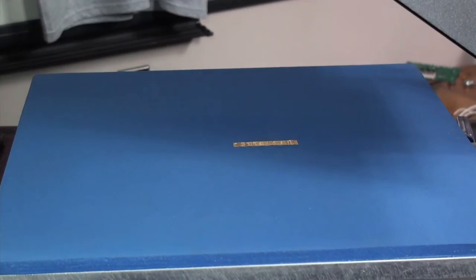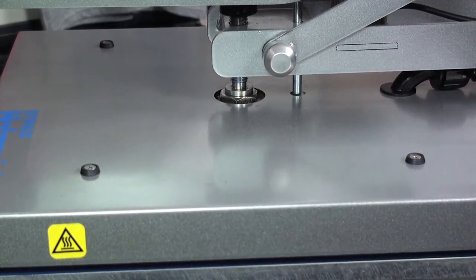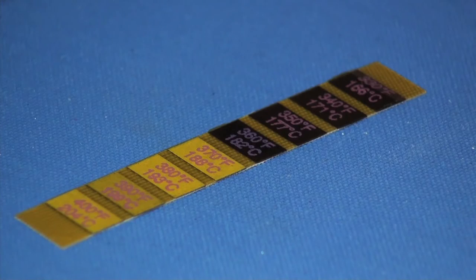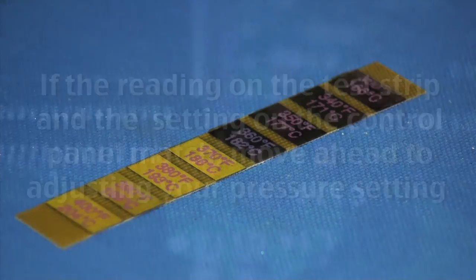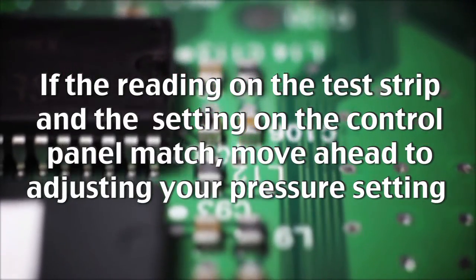Once the press has come to temperature, place one of the test strips supplied on the center of the lower platen. Lock the press down using medium pressure. After opening, check the temperature reading on the test strip. If the test strip and the control board match, then you can move on to setting your pressure.